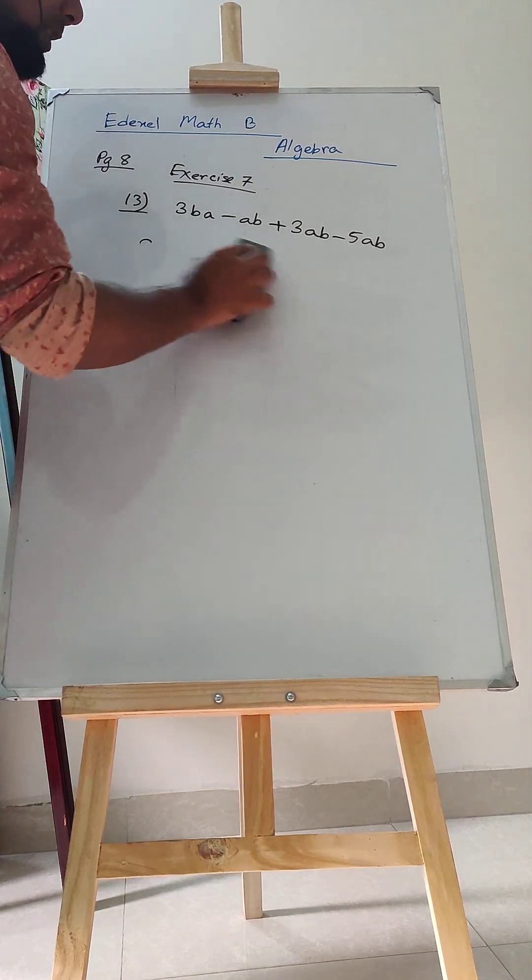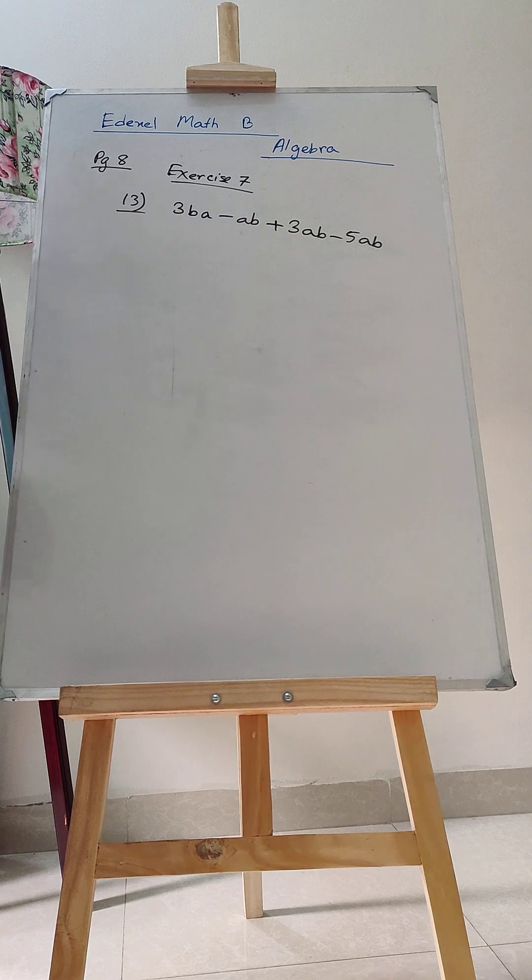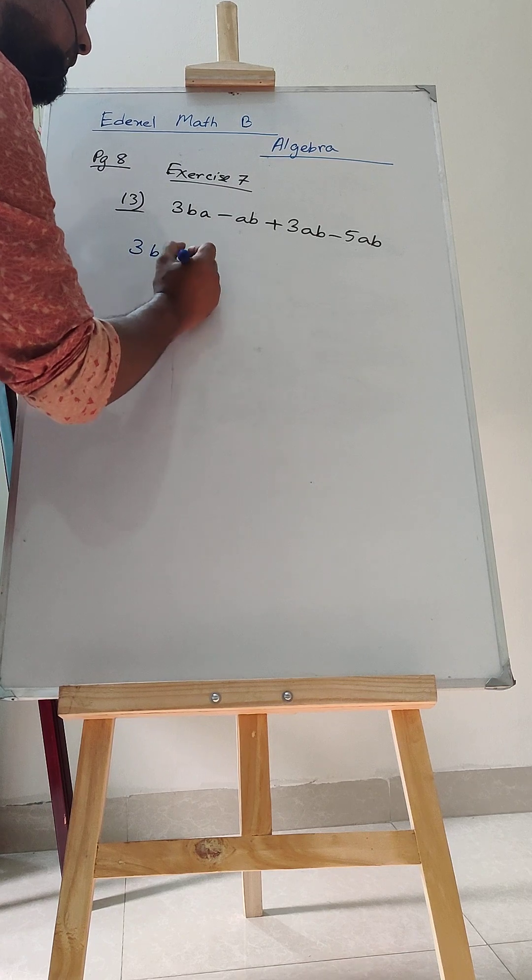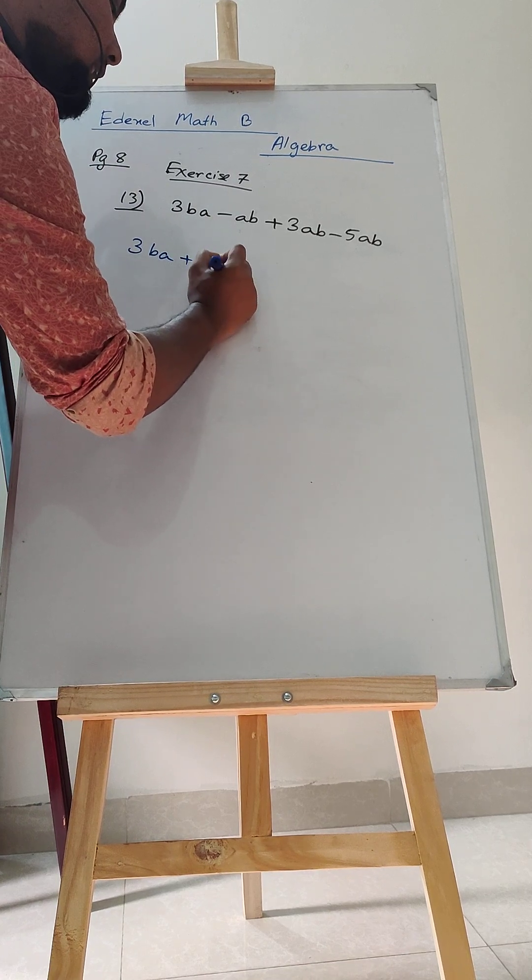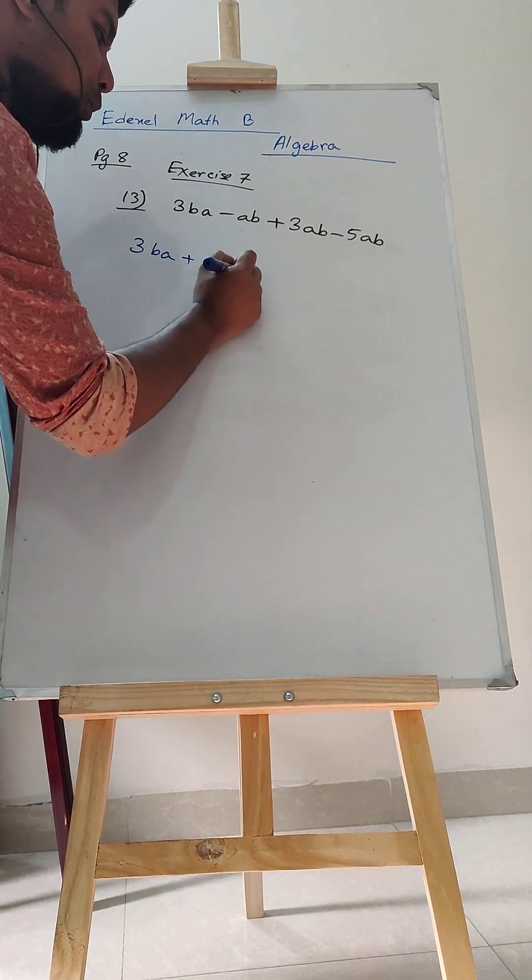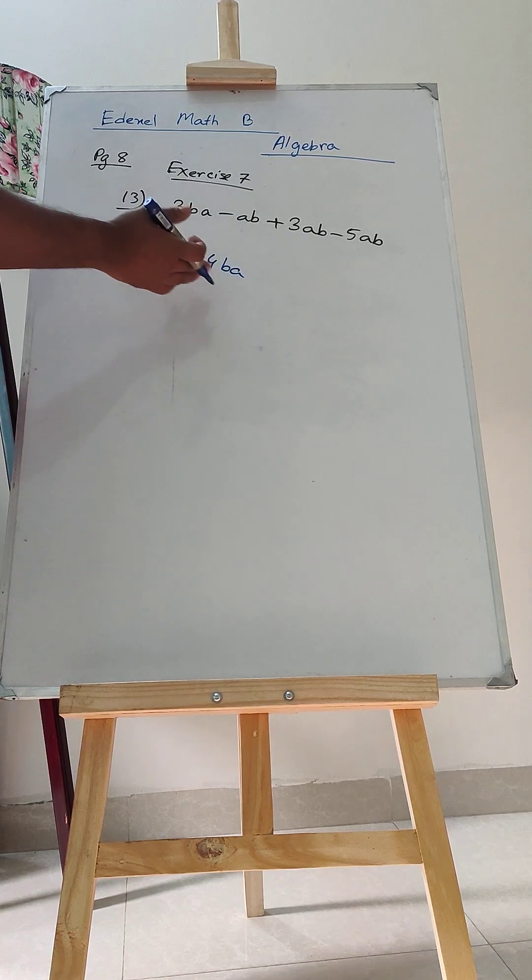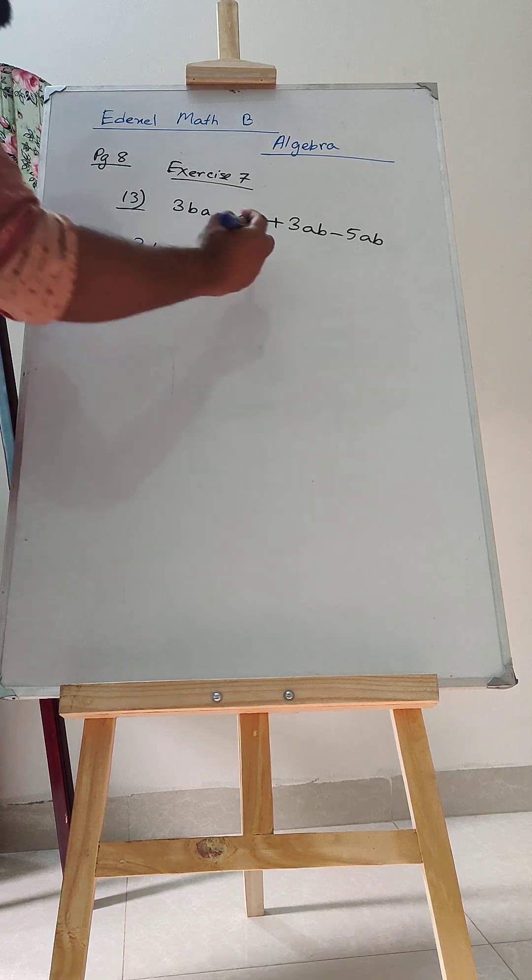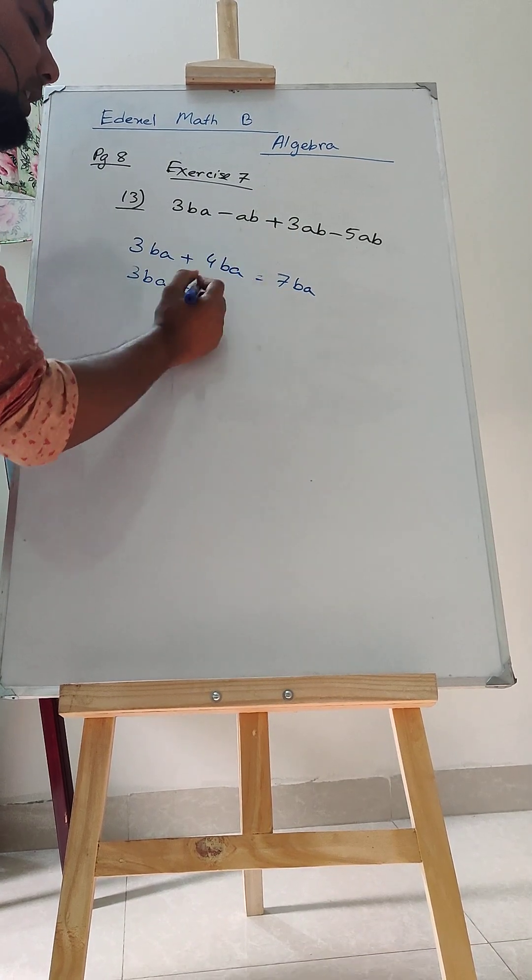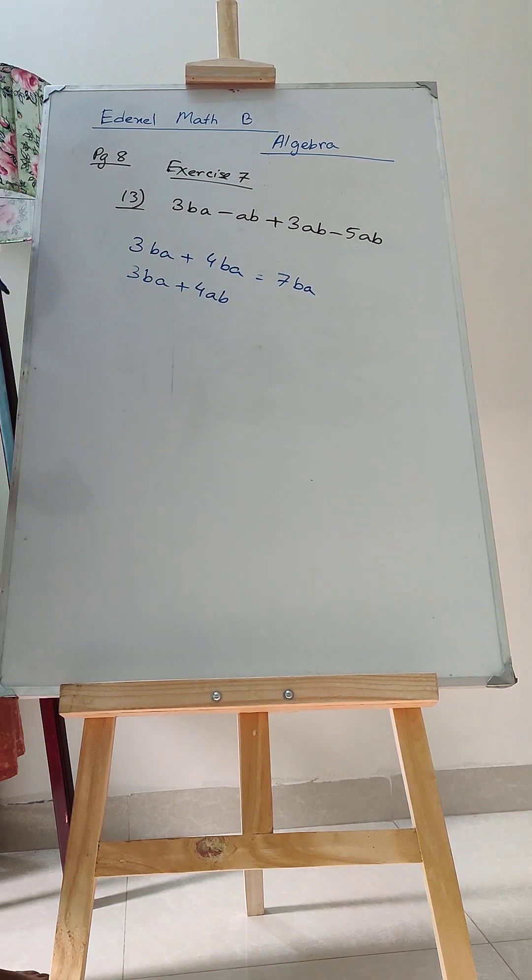So now let me give you an example of how if you have 2 variables attached to a number. Let's say 3BA plus 4BA. It is easier to understand that both are BA. So, of course, you can add it because both are same. It will be 7BA. But what if the chronology of the variables are changed. Let's say 3BA plus 4AB. Then what to do?